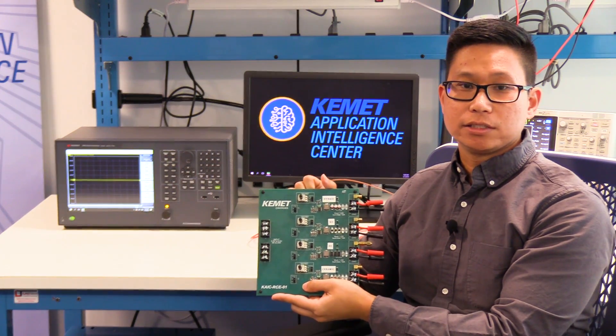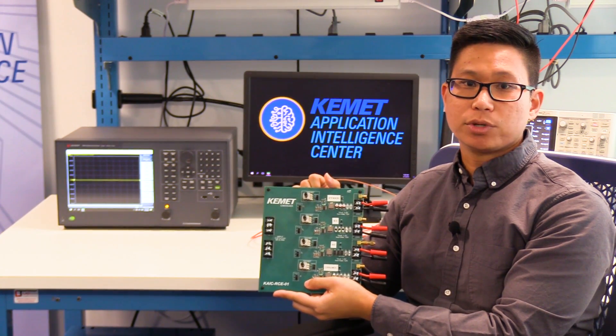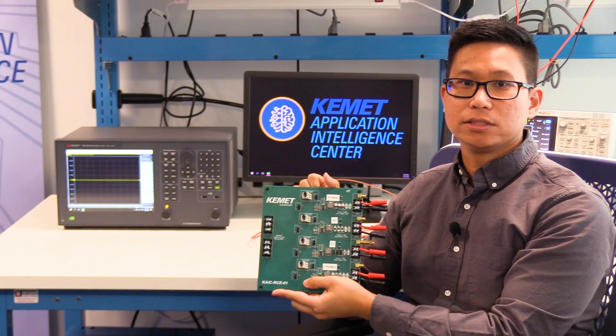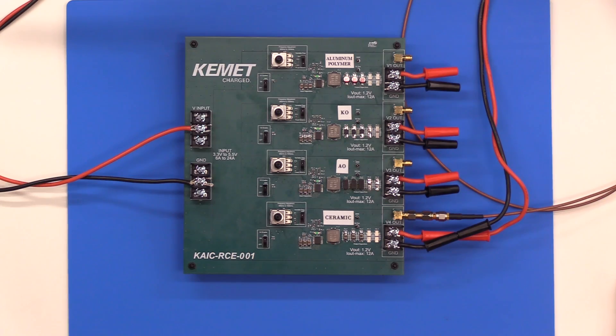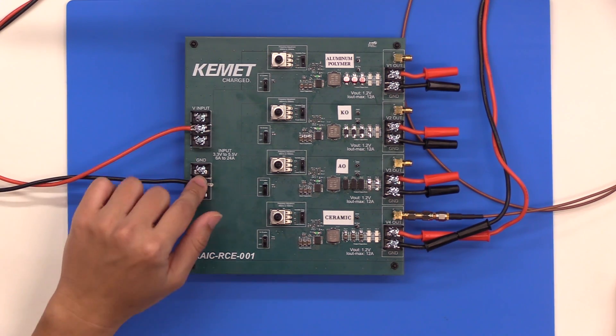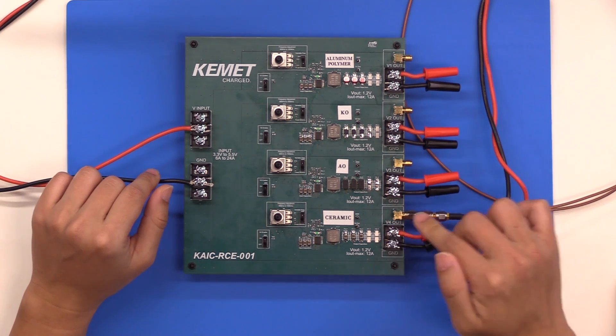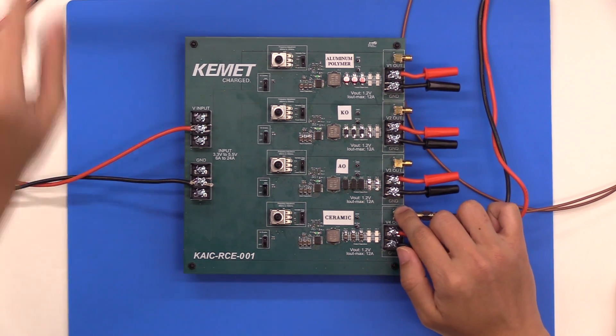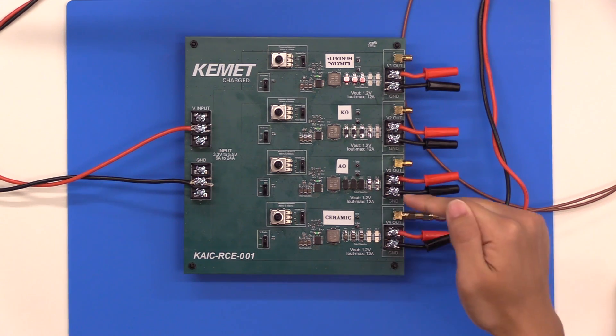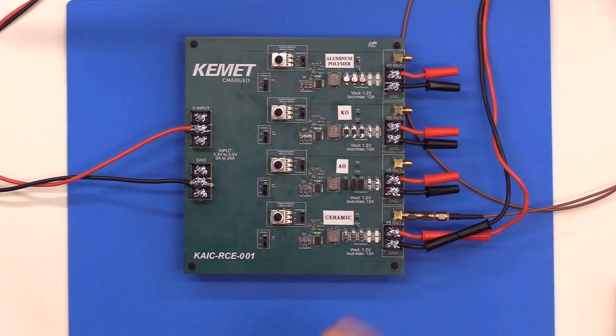Next, let's see how the different KEMET capacitors compare to the TI evaluation board using KAIC RCE001. The circuit is the same, but all the capacitors and inductors are KEMET parts and the PCB has a different layout. Here we have the 5-volt input connected, the DC load is connected here, and the power rail probe is connected here. We will be looking over the 4 different capacitor technologies on this board.